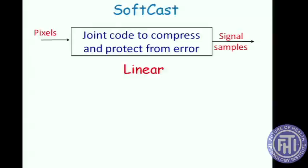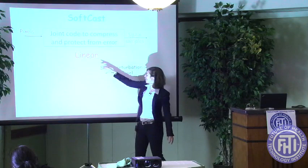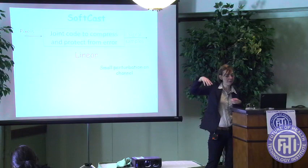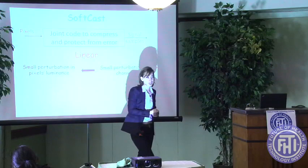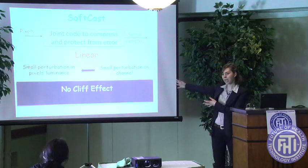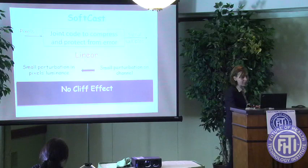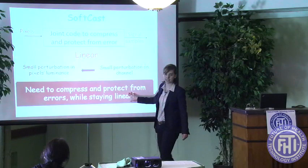The key property of this code is that it is linear. Because the code is linear, there is a linear relation between the signal samples and the pixel values. When signal samples are transmitted on the channel and there is some noise affecting them, that noise translates — small noise also translates to small perturbation in the pixel luminance. The least significant bit when affected by noise translates into the least significant bit in the pixel luminance being affected. You don't get a cliff effect. The real challenge is to maintain this linear behavior while compressing the video and protecting it from errors — and this is exactly what we are going to do.